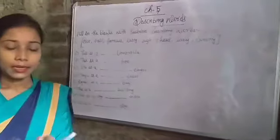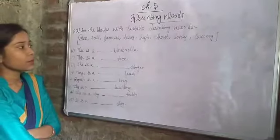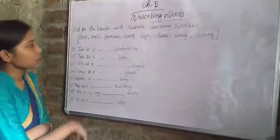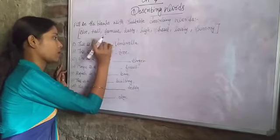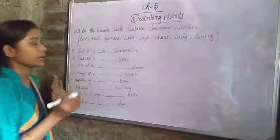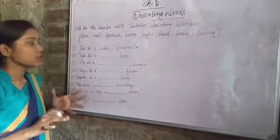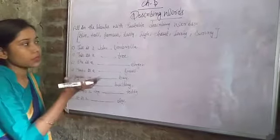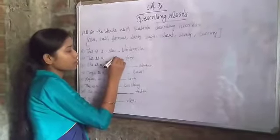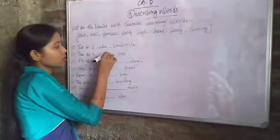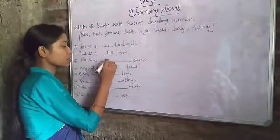So we have 8 sentences total. For number one — this is a blank umbrella — I will choose: this is a blue umbrella. For number two — this is a blank tree — this is a tall tree. For number three — she is a blank singer — she is a famous singer.